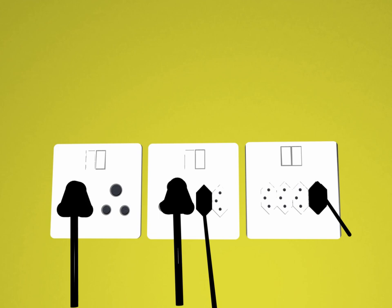The 10A socket will accept only 10A plugs and Europlugs, while the 20A socket will accept both 10A and 20A plugs, plus Europlugs.